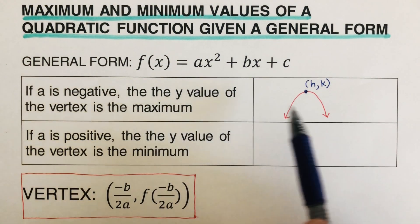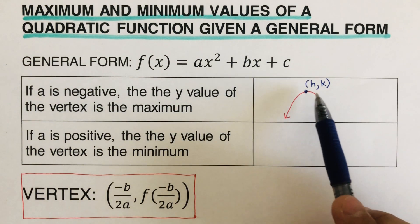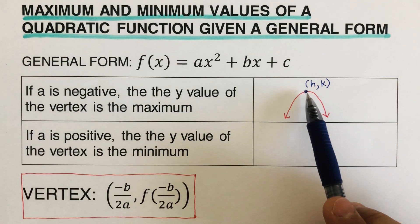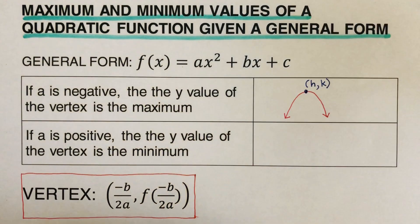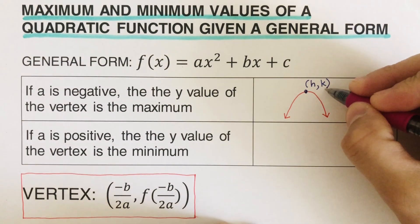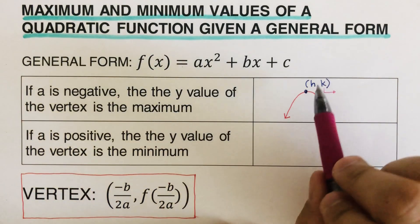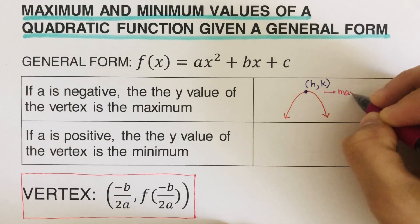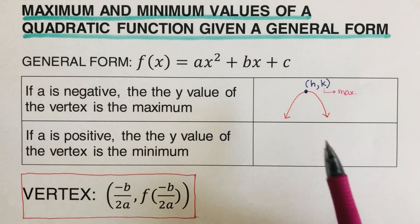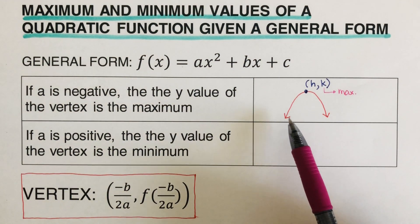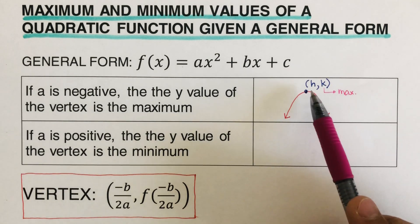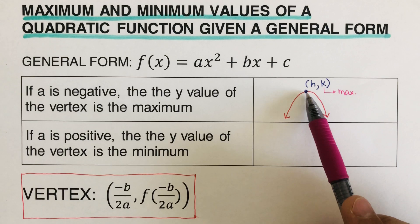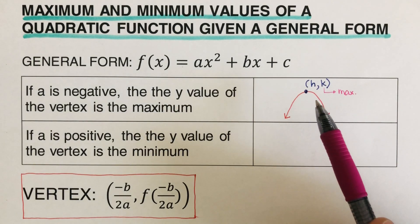So if it opens downward, that means this is the maximum point — the k value is considered the maximum. The reason it has a maximum when 'a' is negative is because imagine this is like a hill, like a mountain. This is the top of the mountain, so that's the maximum height.